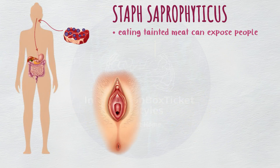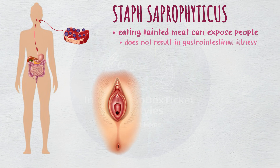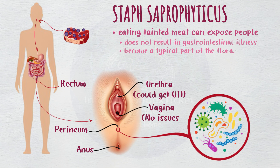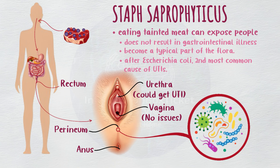Eating tainted meat can expose people to Staph saprophyticus, but this does not result in gastrointestinal illness. Rather, bacteria enter the rectum and anus from the gut and eventually colonize the perineum to become a typical part of the flora. It can spread from the perineum to the urethra, where it can induce a urinary tract infection (UTI), or to the vagina, where it causes no problems. After Escherichia coli, Staph saprophyticus is the second most common cause of UTIs.